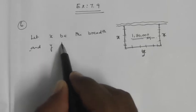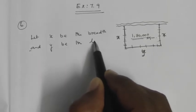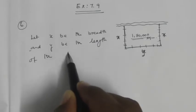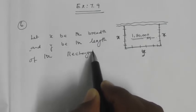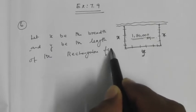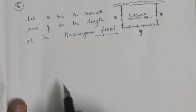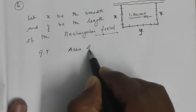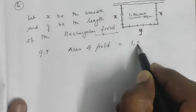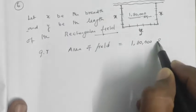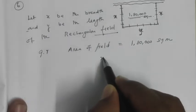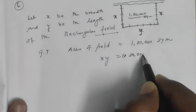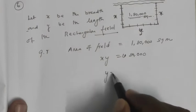Let x be the breadth and y be the length of the rectangular field. Given that area of the field is 180,000 square meters, that is xy = 180,000, so y = 180,000 divided by x.